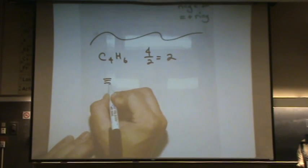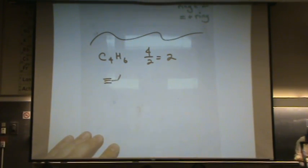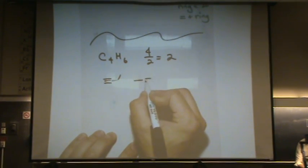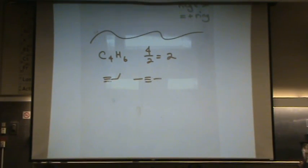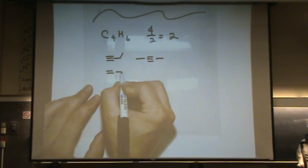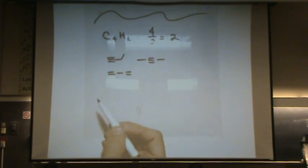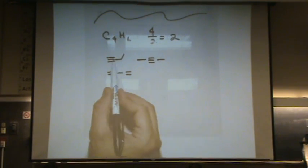For example, this could be this. There's this C4H6. It could be this. That's just another way, another place to put the triple bond. It could be two double bonds. So it could look like this. Because two degrees of unsaturation, each double bond counts for one. So one, two. Or a triple bond counts for two.